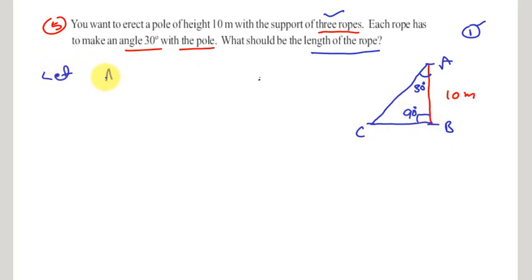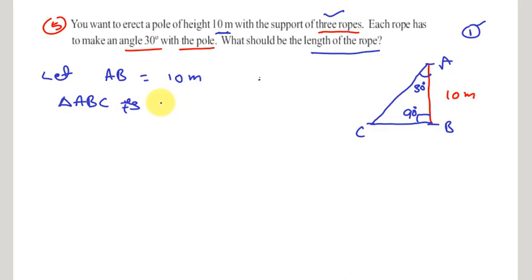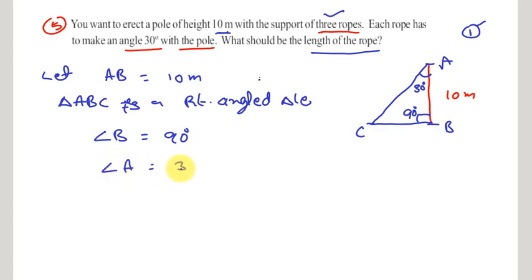AB is the pole with a length of 10 meters. In triangle ABC, which is a right angle triangle, angle B is 90 degrees and angle A is 30 degrees. AC is the rope, and we need to find the length of the rope AC.